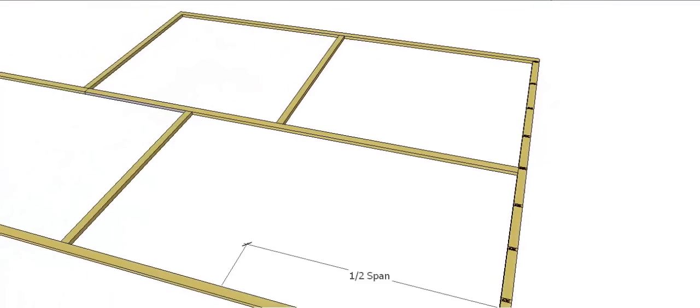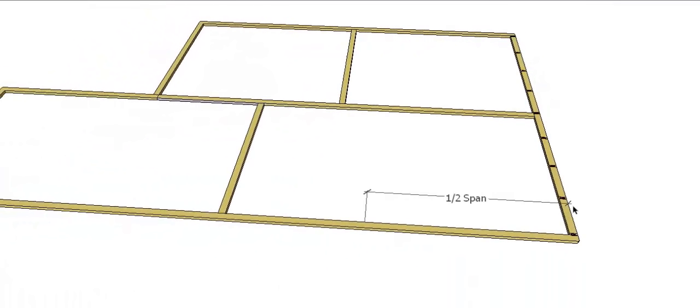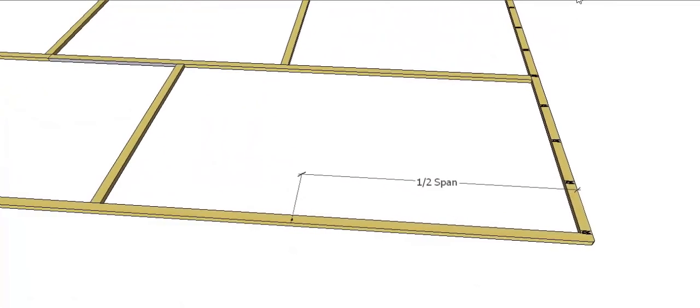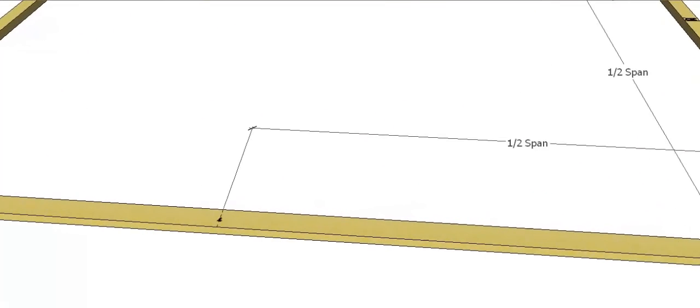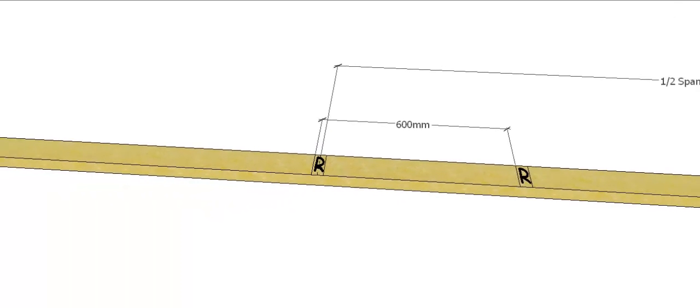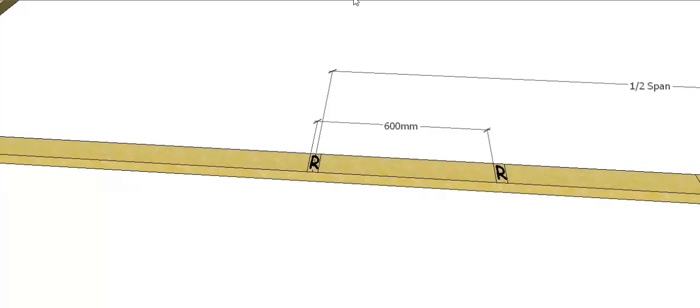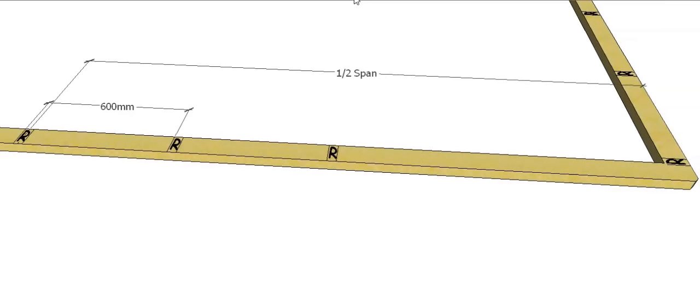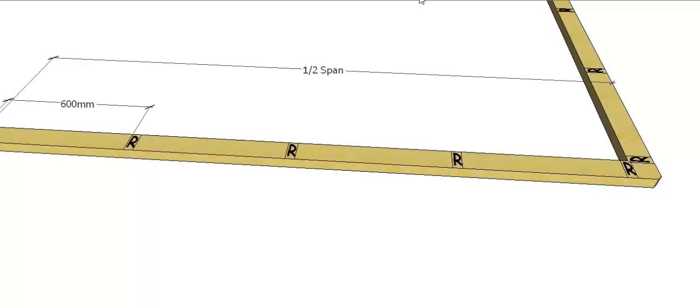So now I can come around to one side and again I'm going to measure my half span from outside the plate up to what will be the center of my first centering rafter. So again, center line. The rafter's positioned over the center line, so halfway and halfway, and then we again mark out our common spacing or standard spacing away from that position. So 600 centers again all the way down to our corner.